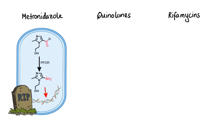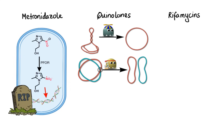Now let's move on to quinolones. Unlike metronidazole, the mechanism of action of quinolones involves interactions with topoisomerases, which are the enzymes responsible for the unwinding and unlinking of DNA. In order for bacterial cells to replicate, the tightly coiled bacterial chromosome must unwind so that the DNA code can be accessed and copied. The two principal topoisomerases that perform this task are DNA gyrase, which unwinds and relaxes supercoiled DNA, and topoisomerase-4, which facilitates separation of the linked daughter DNA molecules after replication is complete. Both DNA gyrase and topoisomerase-4 are the primary targets of quinolones, which bind to these enzymes and effectively inhibit their function, blocking DNA synthesis and cell growth, ultimately leading to bacterial cell death.